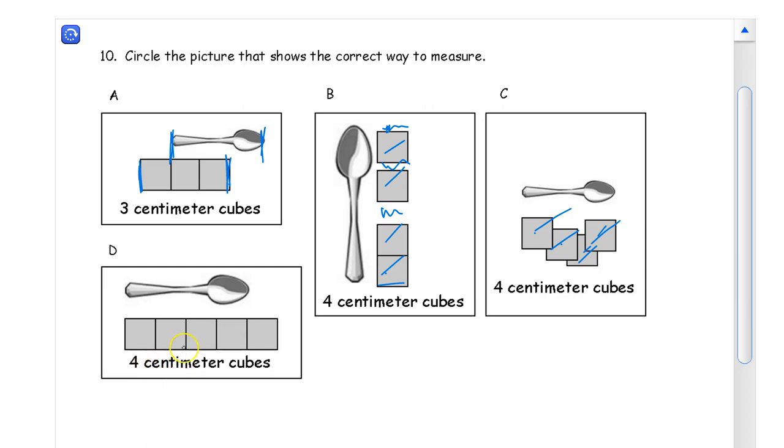I'll look at this one here. This says four centimeter cubes. And this is a correct way to measure. I'm going to circle this picture. And this has four. Is it four centimeter cubes? One, two, three, four. It is four. It is four. And the end points match up here. And this matches up. The end of the spoon matches up with the end point of the fourth square or cube. So that's four. There's no gaps. There's no overlaps. So that's a good measurement.